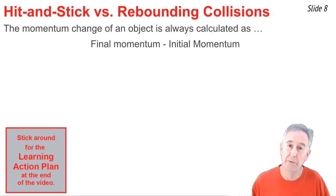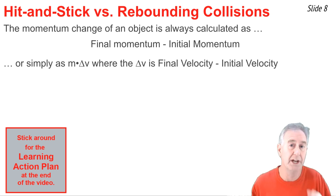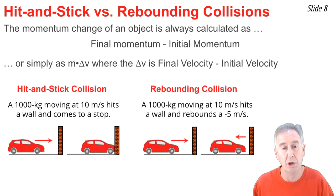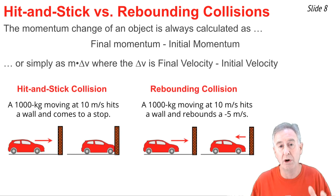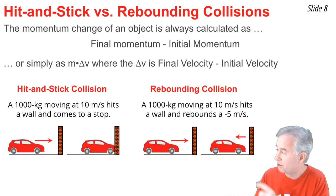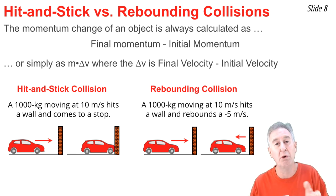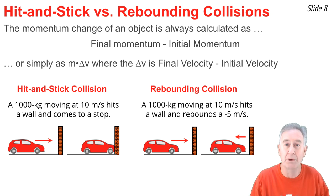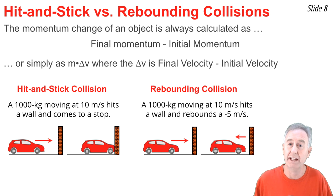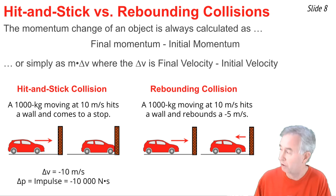When analyzing a collision to determine the momentum change, we always go final momentum minus initial momentum, or simply mass times velocity change, where Δv equals final velocity minus initial velocity. Consider two contrasting collisions. The first is a hit-and-stick collision, where a car moving at 10 m/s hits a wall, crumples up, and stops — a velocity change from 10 to zero.